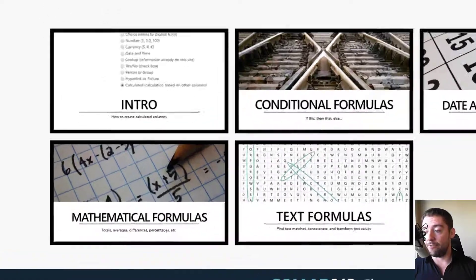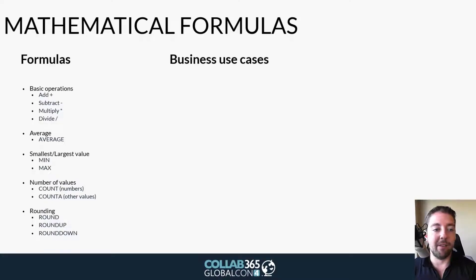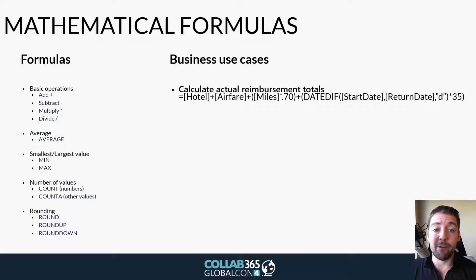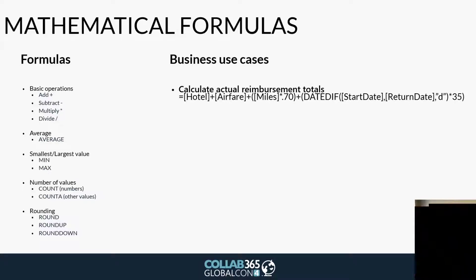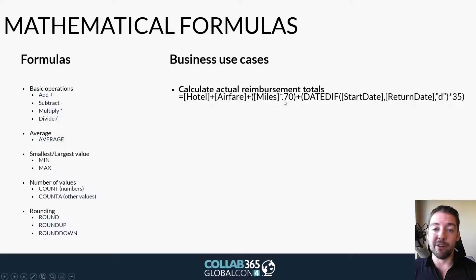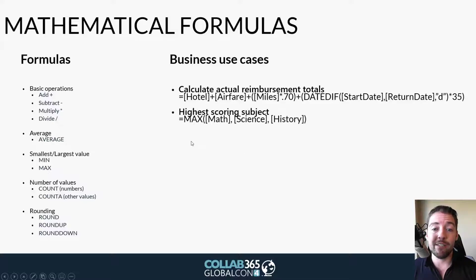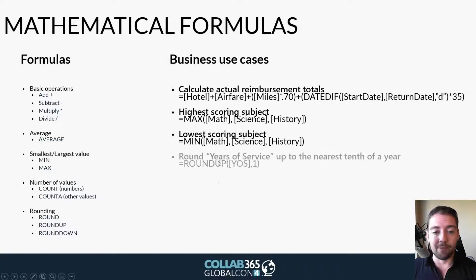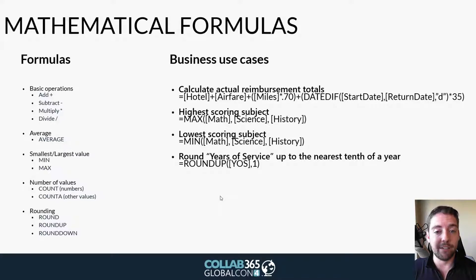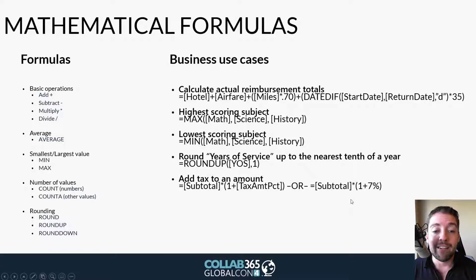Moving on to mathematical formulas — add, subtract, multiply, divide, averages, min, max, count the number of values, and rounding. You might calculate actual reimbursement totals: miles times $0.70 per mile reimbursement, plus DATEDIF between start and return dates times $35 per day as per diem. Find the highest scoring subject out of math, science, and history using MAX. Lowest scoring subject using MIN. Round years of service to the nearest tenth — so 1.35 years rounds up to 1.4. Add tax to an amount: subtotal times (1 + tax percent). Calculate the average of survey rating question scores. Count completed fields as a percentage — if five questions are answered, divide count by five to get 100% completion.